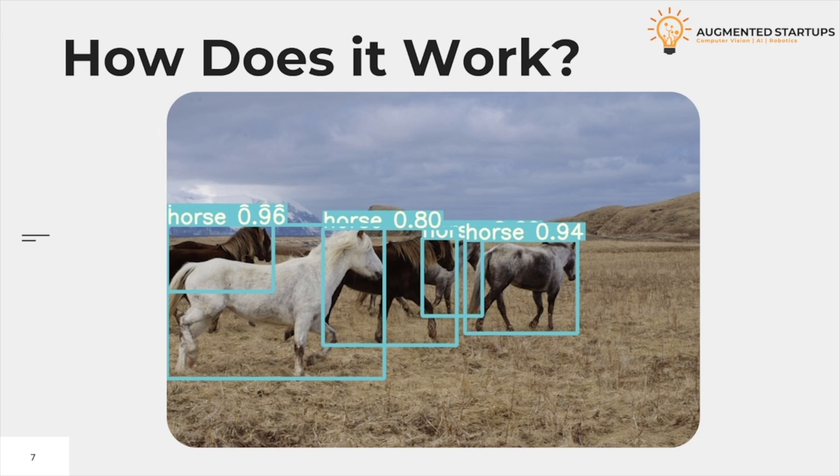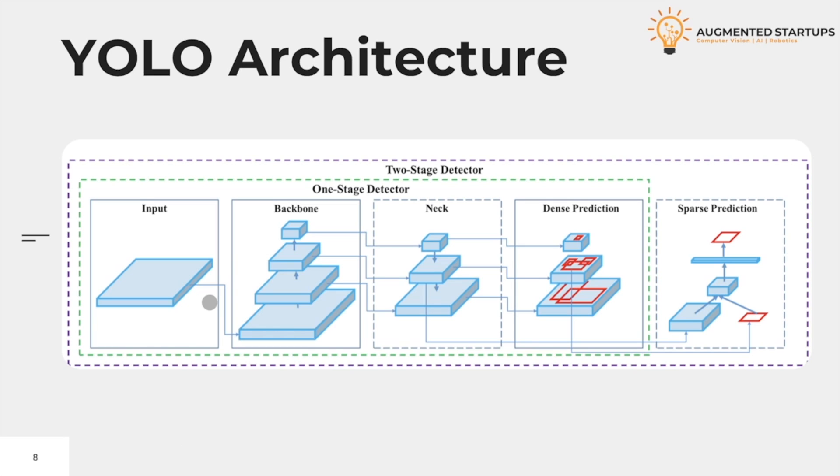Unlike earlier object detection models which localized objects in images by using regions of the image with high probabilities of containing objects, YOLO considers the full image. Now we'll talk about the architecture of YOLO. Image frames are featured through a backbone which is then combined and mixed in the neck, and then they are passed along and YOLO predicts the bounding boxes, the classes of the bounding box, and objects of the bounding boxes. Let's understand each of its modules separately.